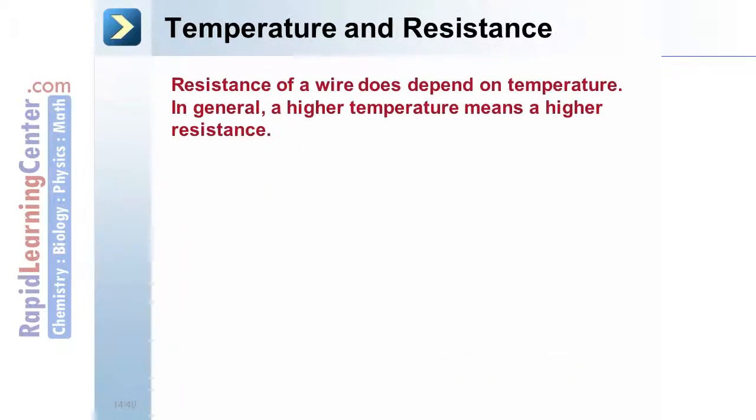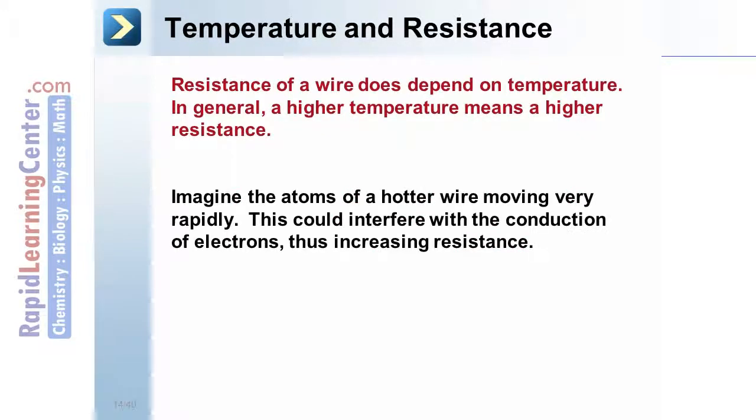Temperature and resistance. Resistance of a wire does depend on temperature. In general, a higher temperature means a higher resistance. Imagine the atoms of a hot wire moving very rapidly. This could interfere with the conduction of electrons, thus increasing resistance. Cold atoms don't move quite so much, whereas the hot atoms move a great deal.